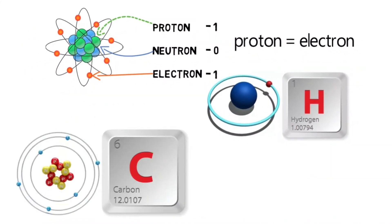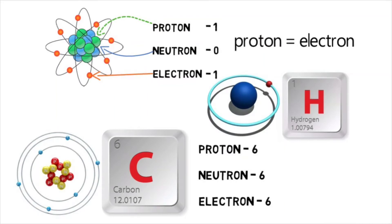Let's look at an example. Take carbon. In carbon, the proton count is 6, the neutron is 6, and the electron count equals the proton count, which is also 6.